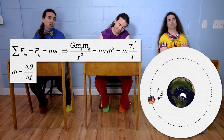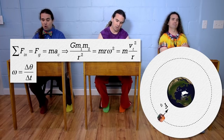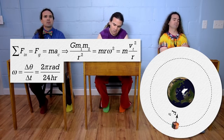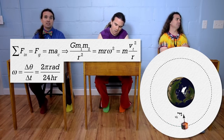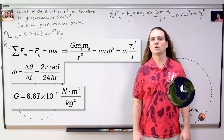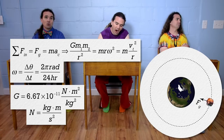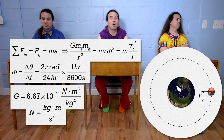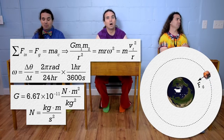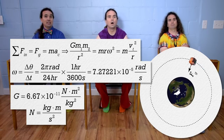Angular velocity equals change in angular position over change in time. The Earth and the satellite go through one revolution, or two pi radians, every 24 hours. But we need angular velocity in terms of seconds, because it needs to match the universal gravitational constant, which is in newtons times meters squared divided by kilograms squared, and newtons are in kilograms times meters per second squared. So multiply by one hour over 3600 seconds to get the angular velocity of the satellite and the Earth: 7.27221 times 10 to the negative fifth radians per second.